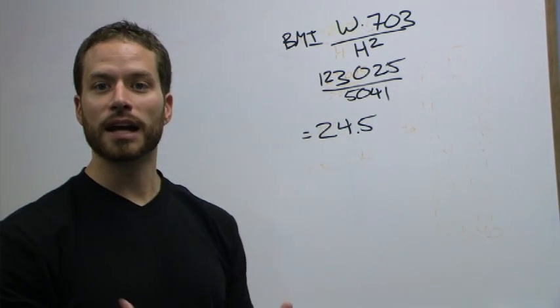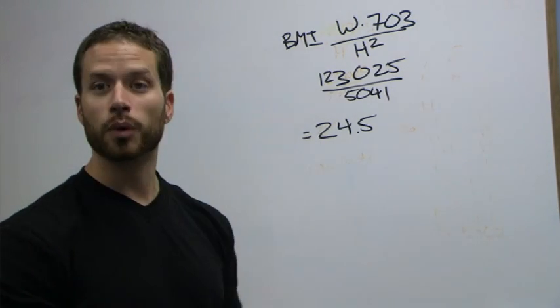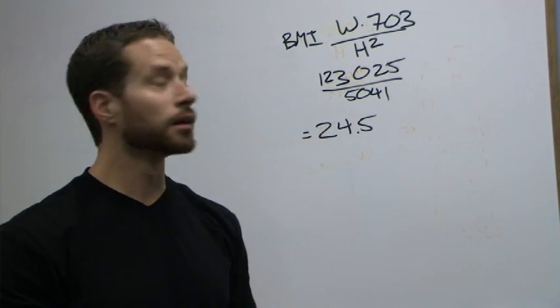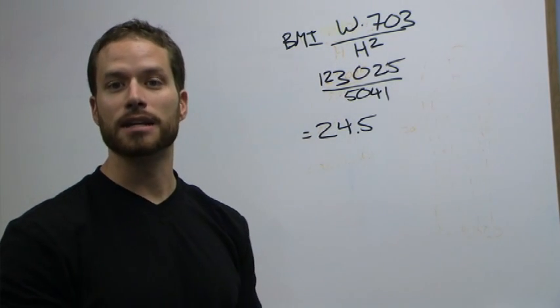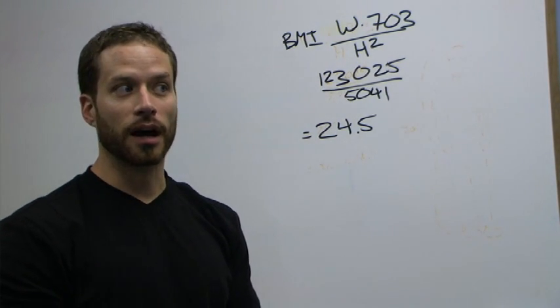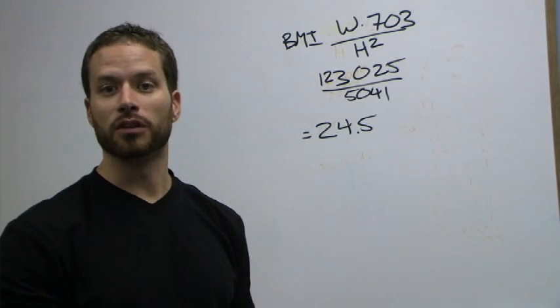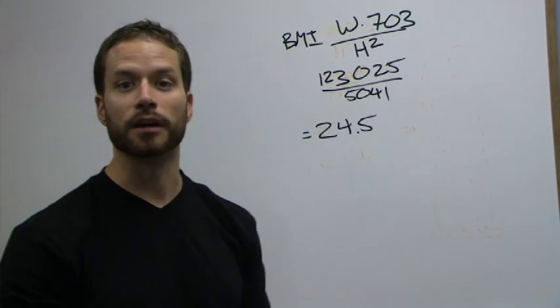To give you an idea, a body mass index above 25 would mean I'm overweight. Going backwards to this equation, I would have to be about 180 pounds to be overweight. Considering that's only about five pounds off my current weight, you can see there's somewhat of a problem here.